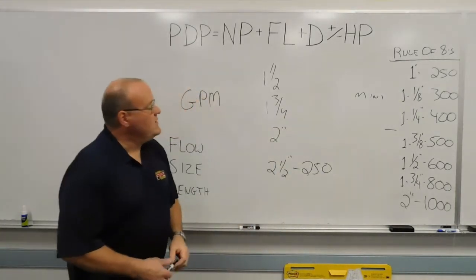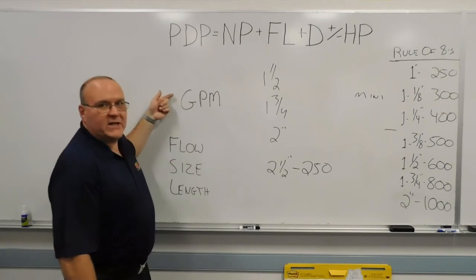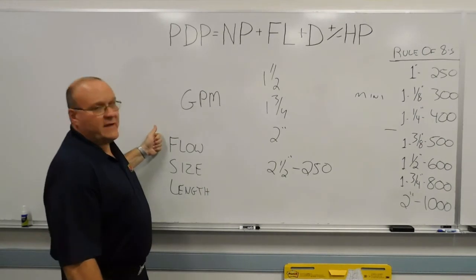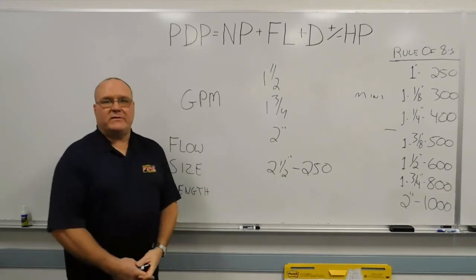And those are all methods that we can use to guesstimate or determine our gallon per minute flow. And then we can take that number and use that to calculate the friction loss in any given line. That's today's training minute. Thank you.